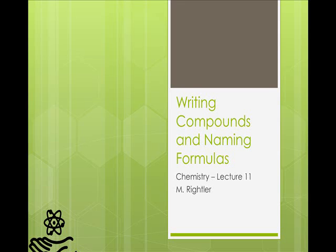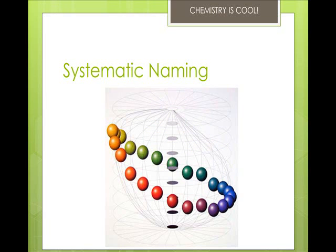I know this seems like it's kind of way into the semester to start learning this, but you really needed the background information to be able to understand it. So let's talk about systematic naming. There are too many compounds to remember the names of them all. Compounds are made of two or more elements, and you have to put together atoms, so the name should tell us how many and what type of atoms are involved.